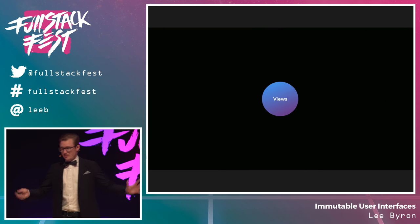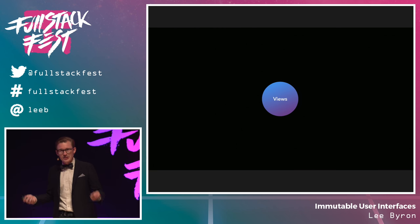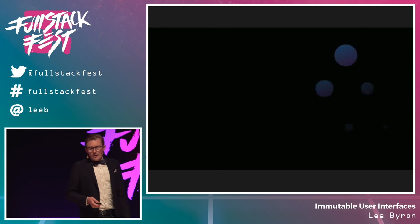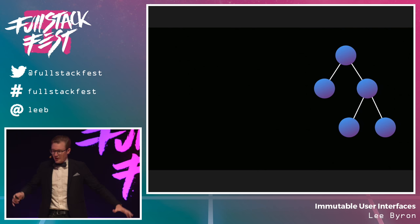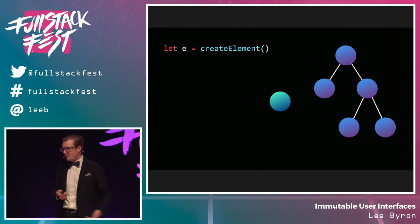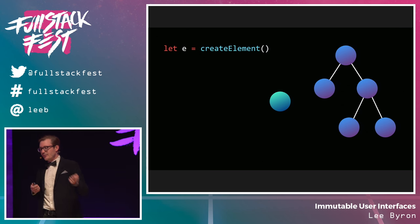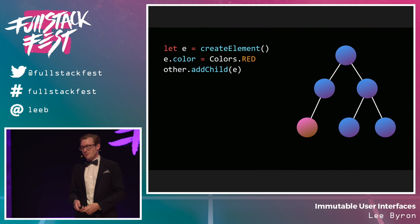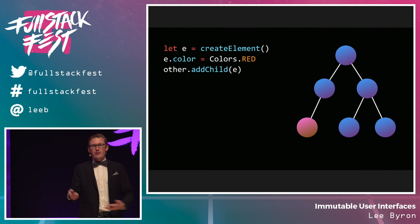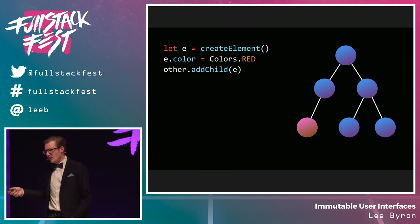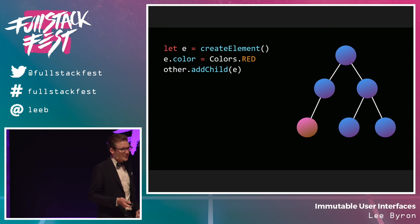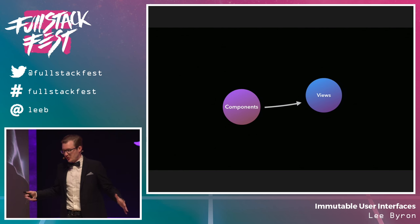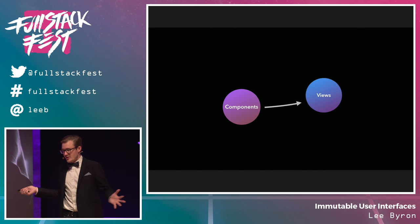Let's start with first principles: views. Every platform we care about already has a concept of a view — the web has DOM elements, iOS has UIViews, Android has Android.view. But these APIs are not great. You create elements, alter their properties, add them to parent elements — all mutative operations. After this you've got to keep track of all these references, look things up by ID, keep things as class members. There's just a lot of stuff to keep track of.